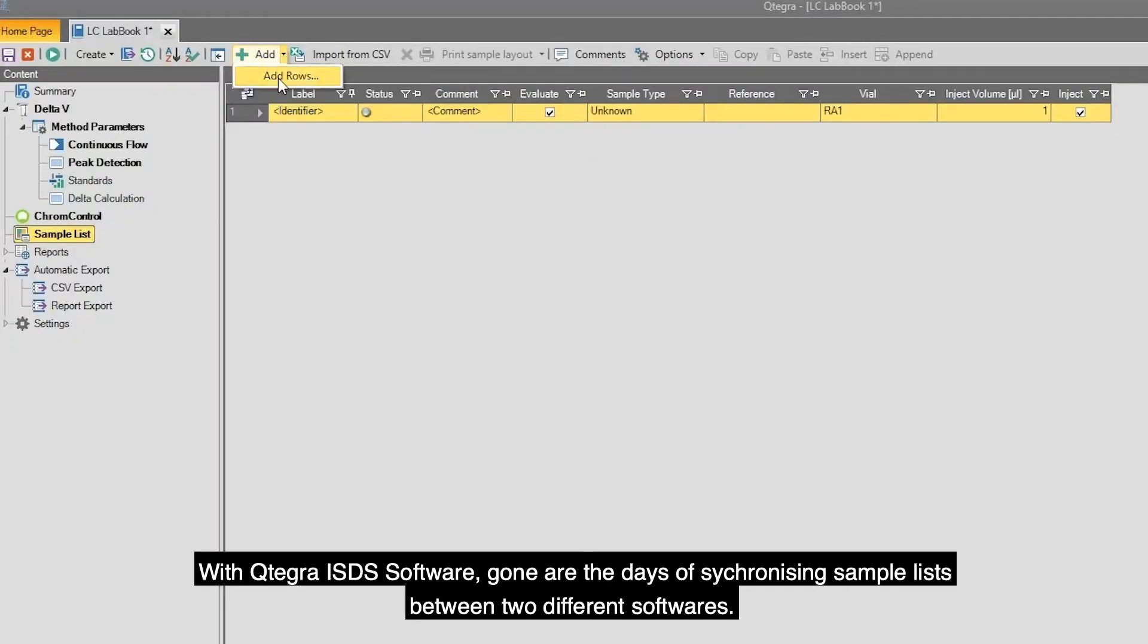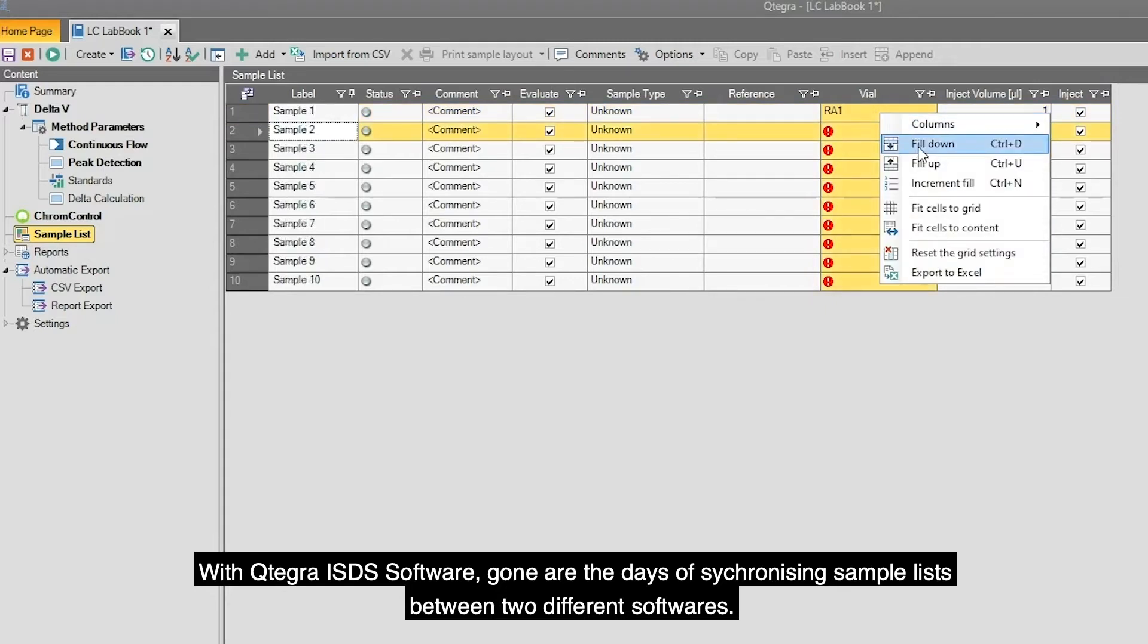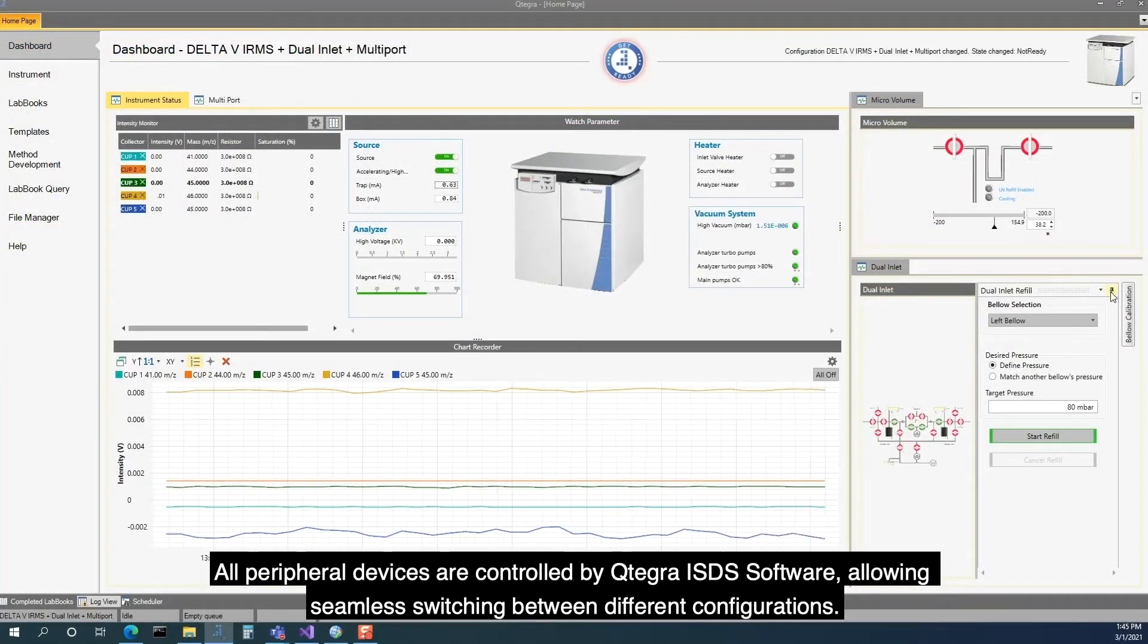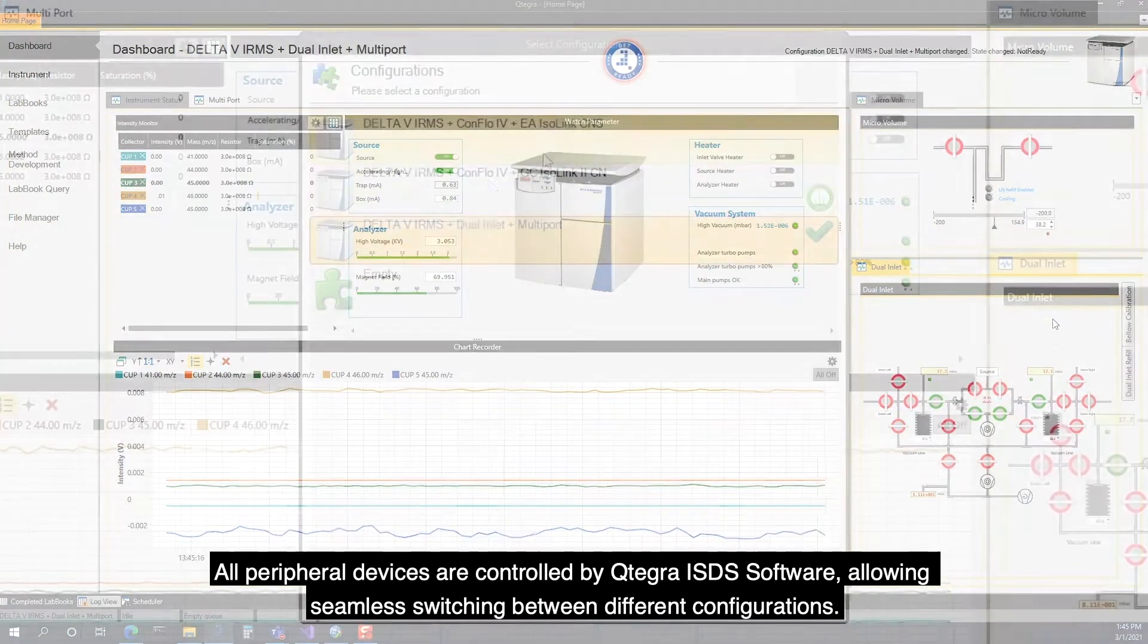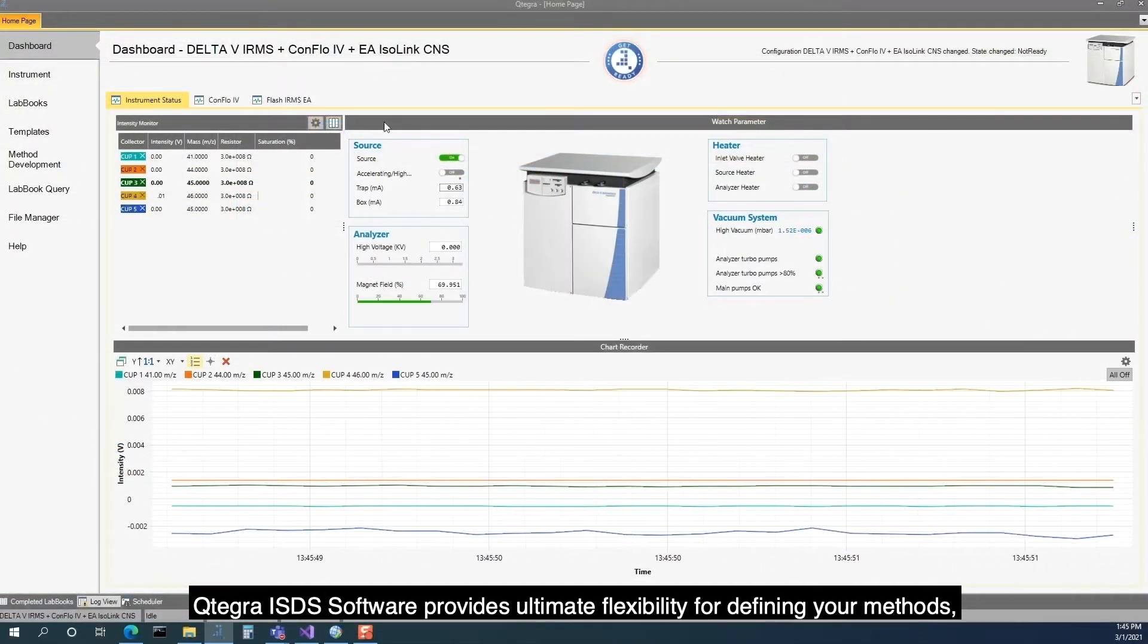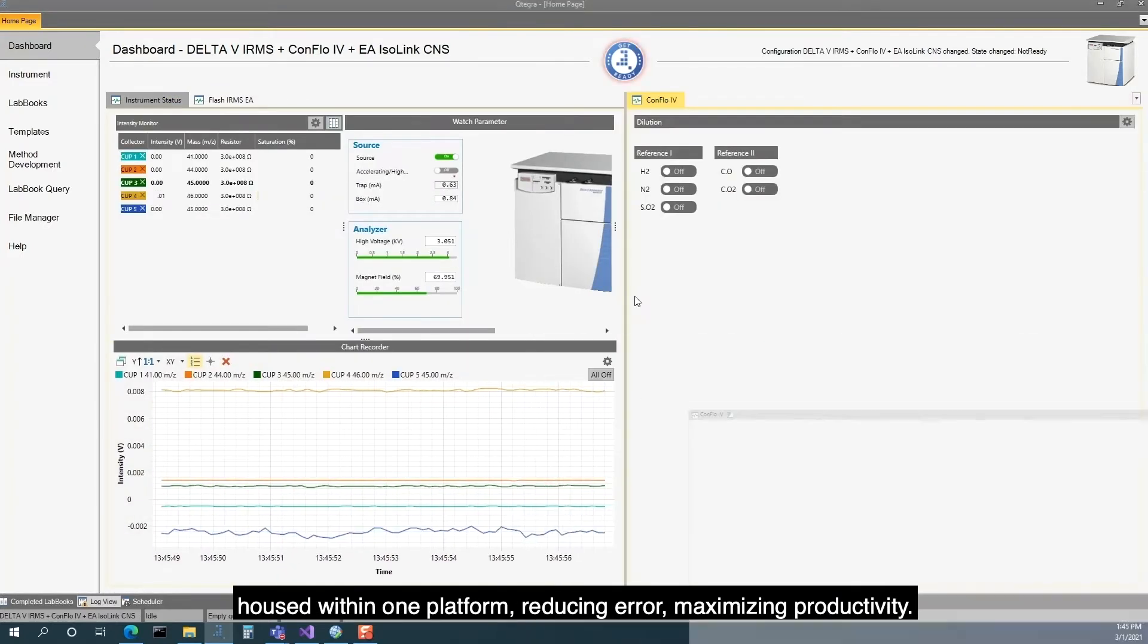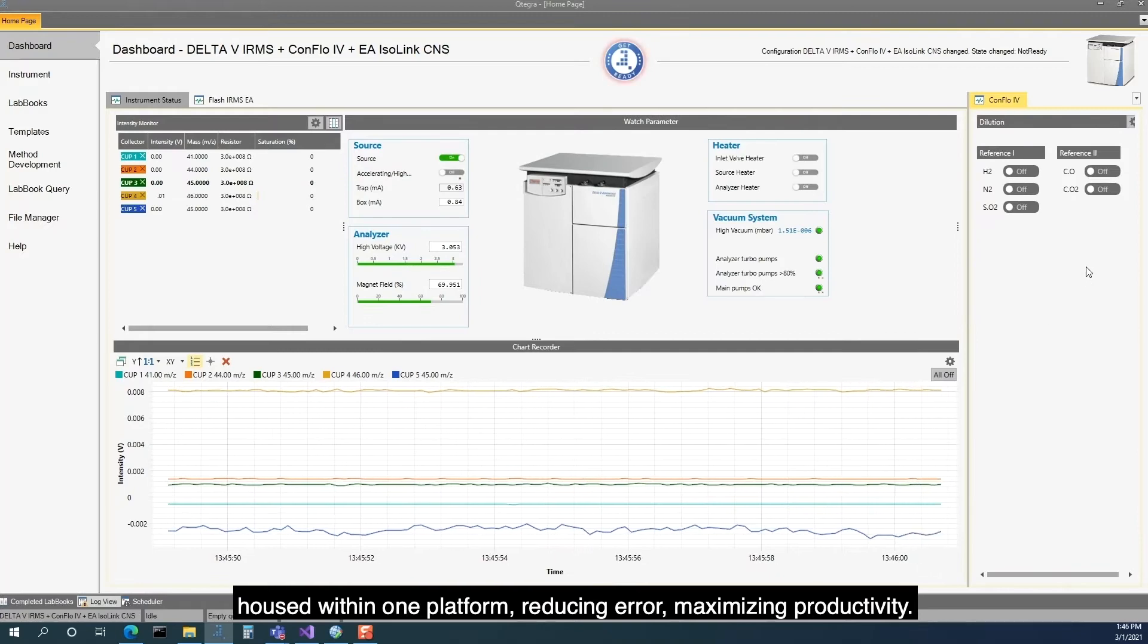With Qtegra ISDS Software, gone are the days of synchronizing sample lists between two different softwares. All peripheral devices are controlled by Qtegra ISDS Software, allowing seamless switching between different configurations. Qtegra ISDS Software provides ultimate flexibility for defining your methods, housed within one platform, reducing error and maximizing productivity.